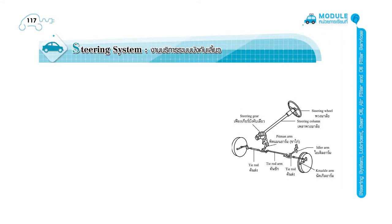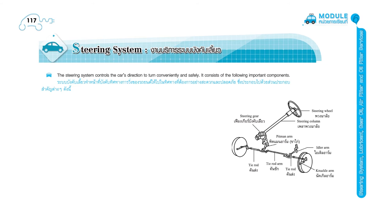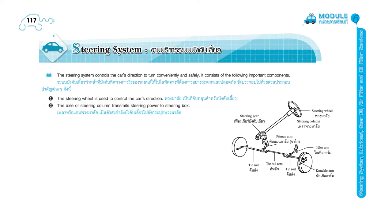Page 117. Steering System. The steering system controls the car's direction to turn conveniently and safely. It consists of the following important components. The steering wheel is used to control the car's direction. The axle or steering column transmits steering power to the steering box.